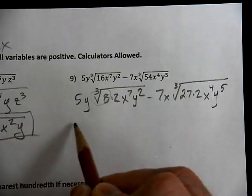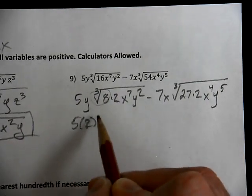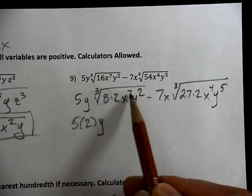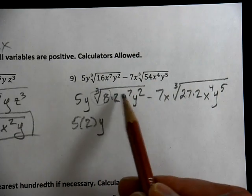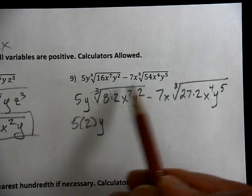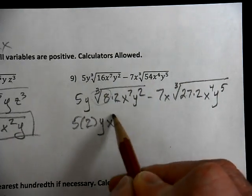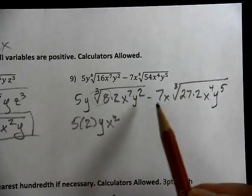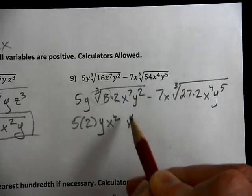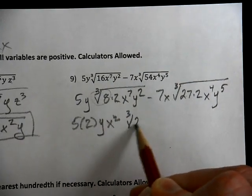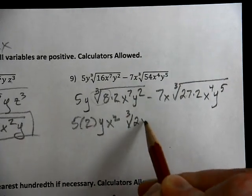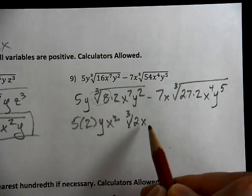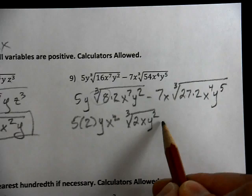I know the cube root, so this is 5 times 2, y, 2 is going to be left inside, 3 goes into 7. How many groups of 3 are there in 7? There are 2 groups. This is x squared. I don't have any more y's that can come out, so I'm going to have the cube root. 2 didn't come out, 1 of the x's didn't come out, and 2 of the y's didn't come out.